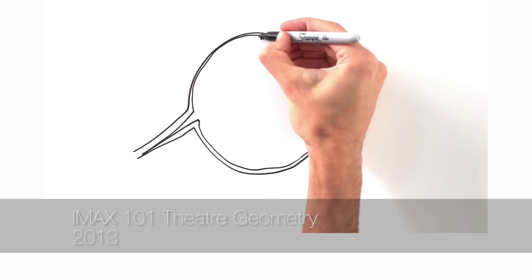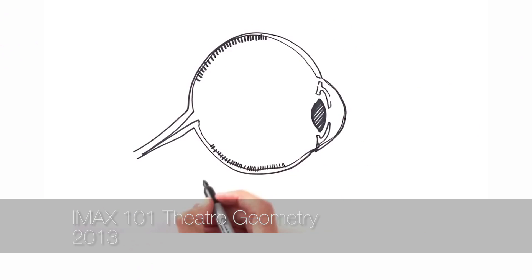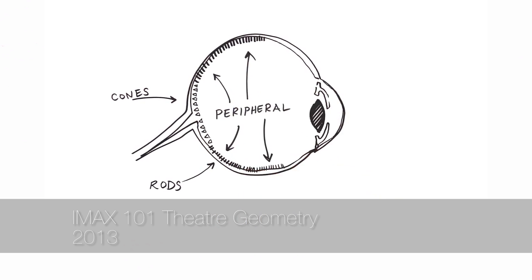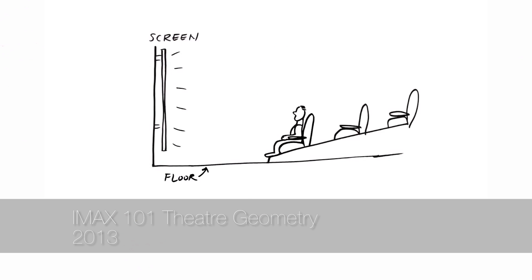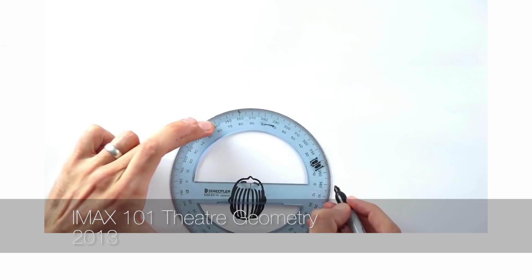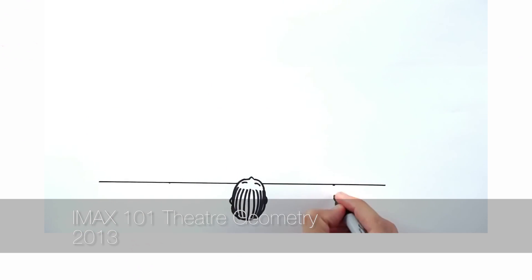The human eye contains two types of photoreceptor cells: rods and cones. The cones are part of your central vision and allow you to focus on detail. The rods are important for your peripheral vision. Filling your virtual field has a greater ability to trick your brain into perceiving motion. The average human has a horizontal field of view of 180 degrees.